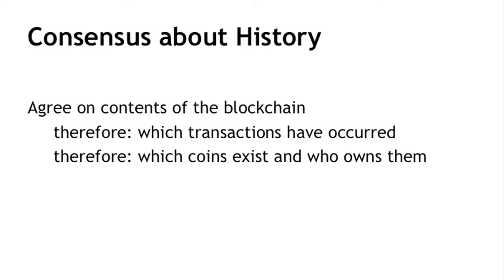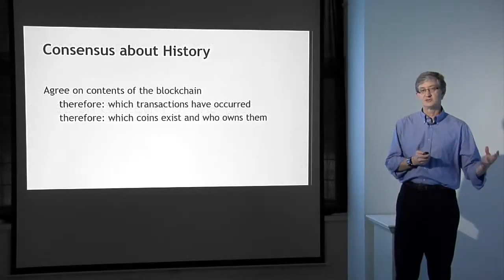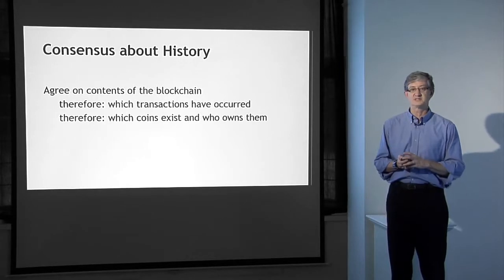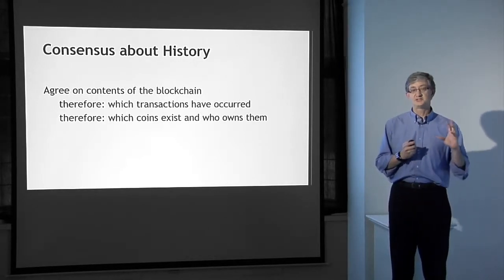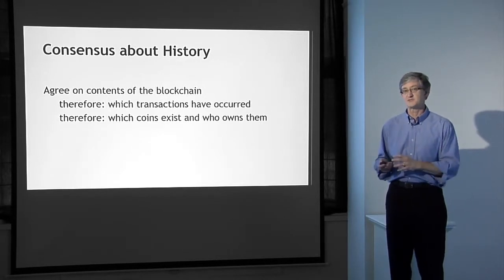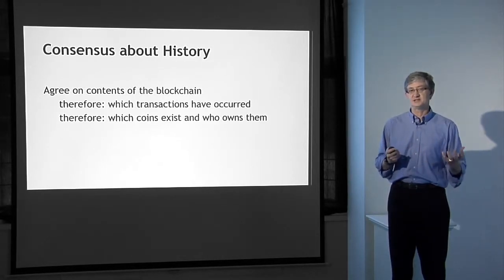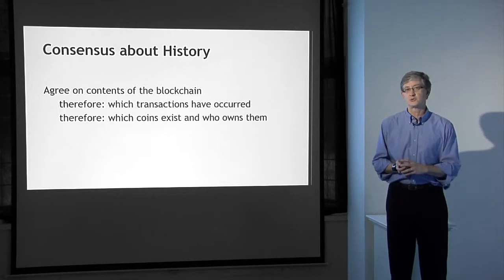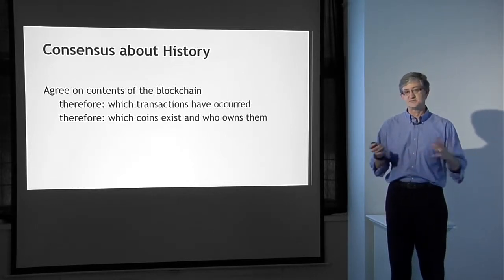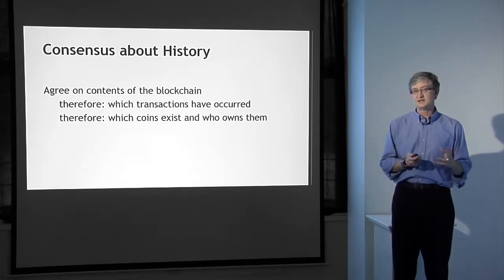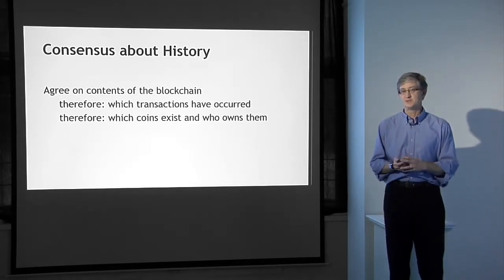The second form of consensus in Bitcoin is consensus about the history — that is, a consensus about what's in the blockchain and what's not, and therefore a consensus about which transactions have occurred. Once you have a consensus about which transactions have occurred, what follows is a consensus about which coins, which unspent outputs exist, and who owns them. This consensus flows from the processes by which the blockchain is built and by which nodes come to consensus.